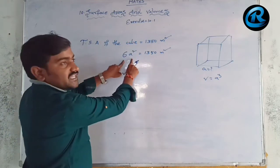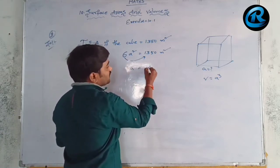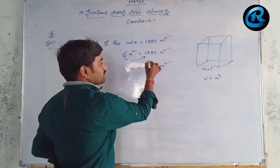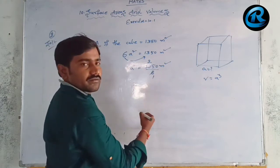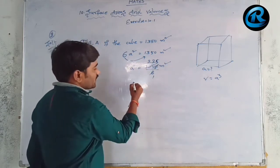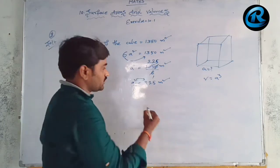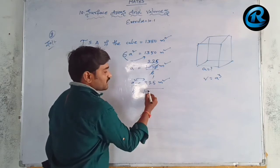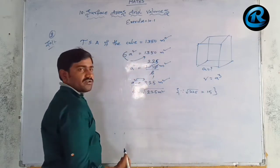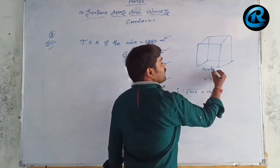So a² = 225 m². Taking the square root of both sides: a = √225 = 15 meters. Now we have found 'a' = 15 meters.